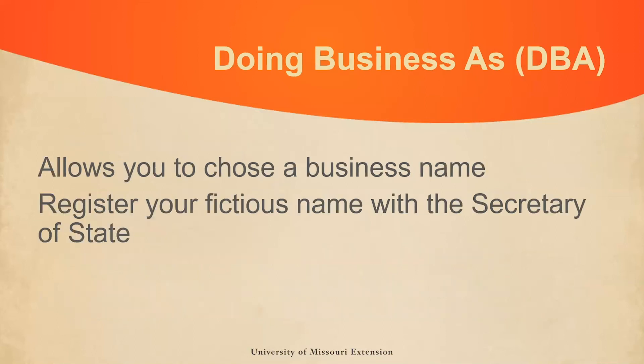Lastly, I will briefly mention business names. A sole prop, partnership, or LLC may wish to use a name other than the owner's name. This would be called a fictitious name, doing business as, or DBA. DBAs require fictitious name registration with the Secretary of State. This registration is good for five years in the state of Missouri. A fictitious name registration does not give up exclusive rights to the name chosen — other businesses may name their business the same as yours. However, it does help establish your business.